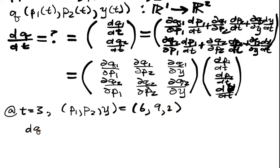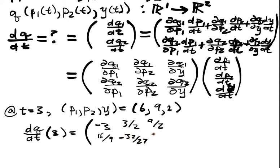And so dq/dt as we've cooked it at 3 is going to be equal to when we write down the Jacobian that we calculated last time it's going to be (-3, 3/2, 9/2; 16/9, -32/27, 32/3).